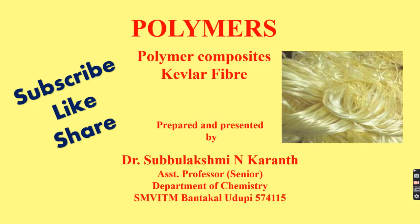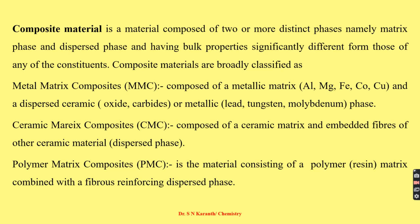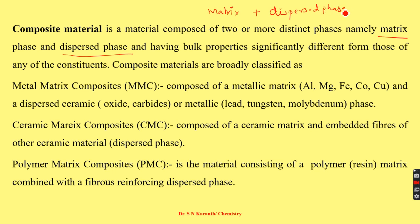This video covers the topic polymer composite, particularly Kevlar fiber. Composites are materials composed of two or more distinct phases: the matrix phase and the dispersed phase. The bulk properties of a composite are significantly different from those of any of its individual constituents. Together, the matrix and the dispersed phase — which may be a fiber phase — are called a composite material.